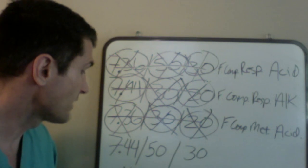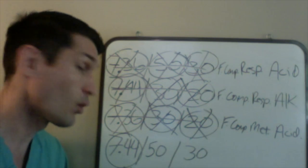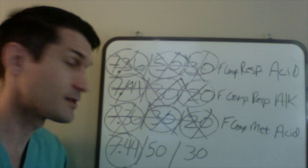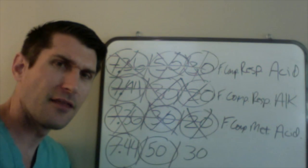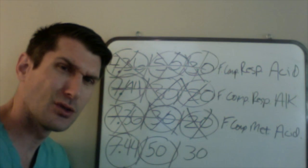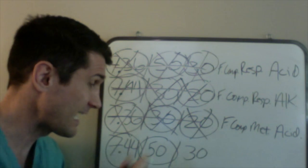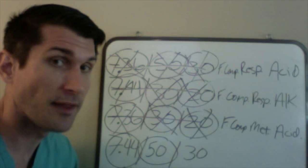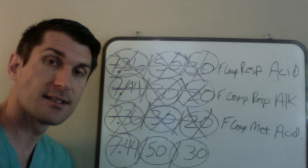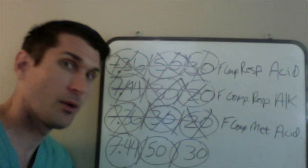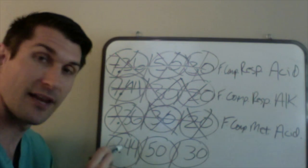We have a pH of 7.44. Is that alkalosis, acidosis, or within normal range? That's within normal range, but it's erring on the side of alkalosis. I'm going to look at the CO2 — is having too much CO2 an alkalotic behavior? No, that's not. So let's look at the bicarb. The normal range is 22 to 26, and it looks like we have too much. When we have too much bicarb, that's an alkalotic situation, which was what created this problem in the first place.